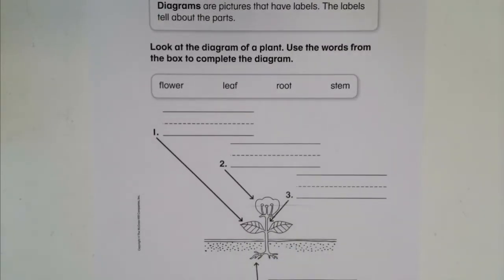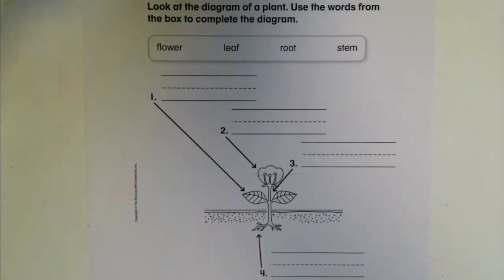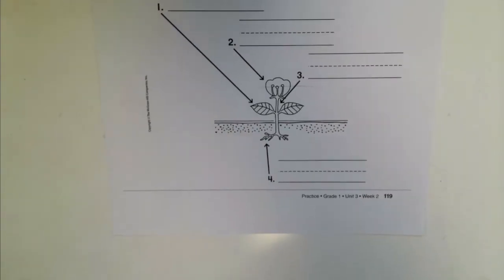Before, we looked at a fire truck and what the different parts of the fire truck were. Well, this is another diagram. This is a diagram of a plant, and we're going to use words from the box to fill in the diagram.